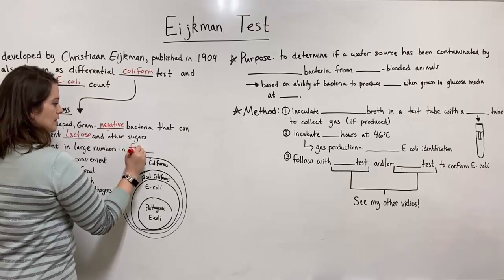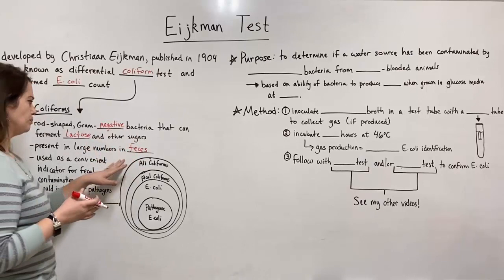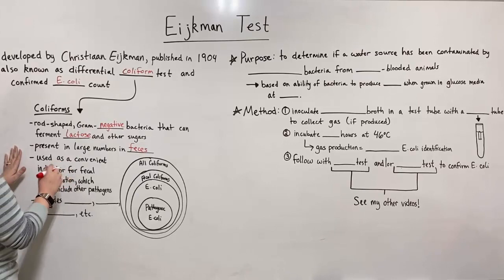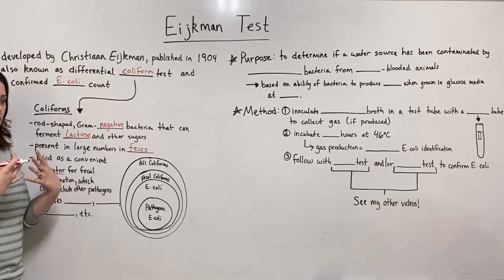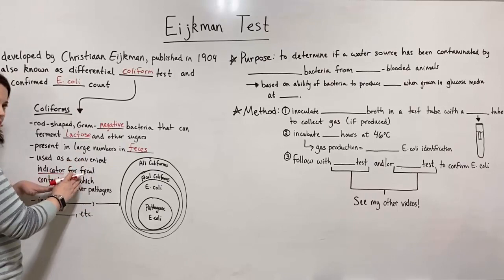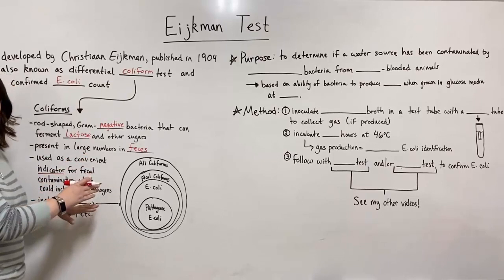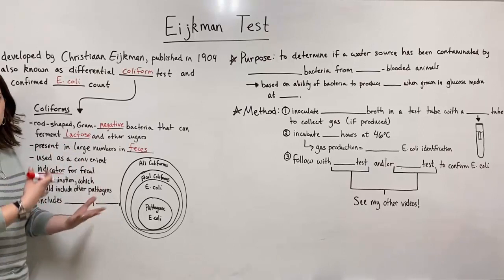Not just human feces, but animal feces in general. Coliforms are important because they can be used as a convenient indicator for fecal contamination. If you have a water source that's been contaminated by feces, there will be fecal coliforms in the water. So if you can detect fecal coliforms, then you can know that there was fecal contamination and that there could be other fecal pathogens present as well.